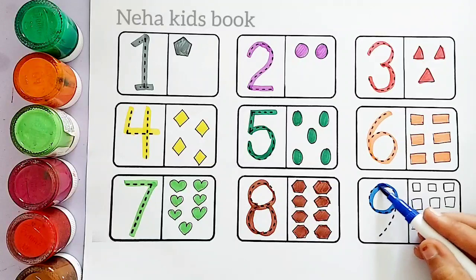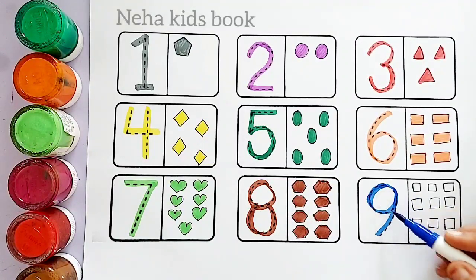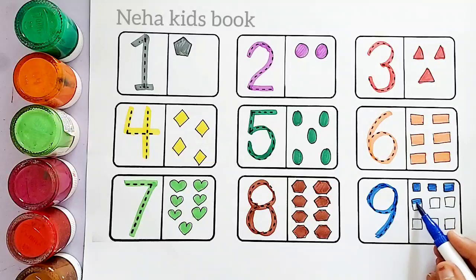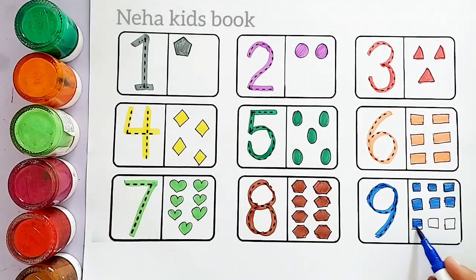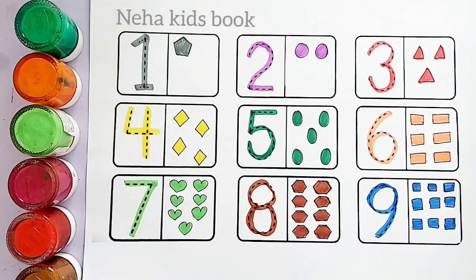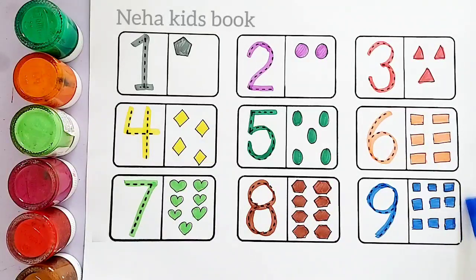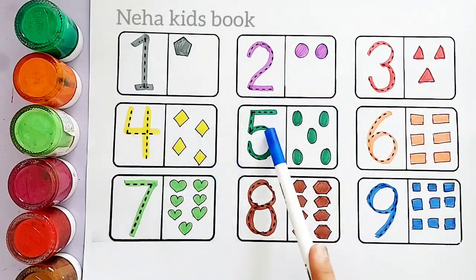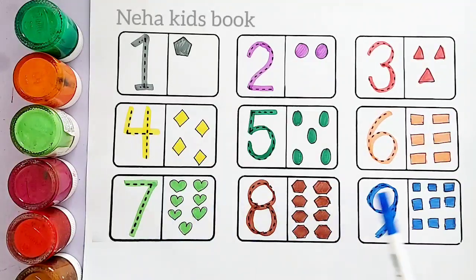Blue color, number nine. One square, two square, three square, four, five, six, seven, eight, nine squares. Number nine: one, two, three, four, five, six, seven, eight, nine squares.